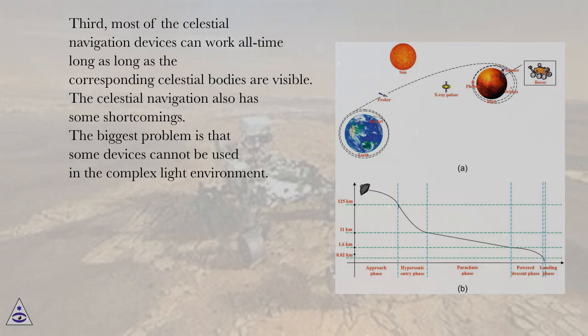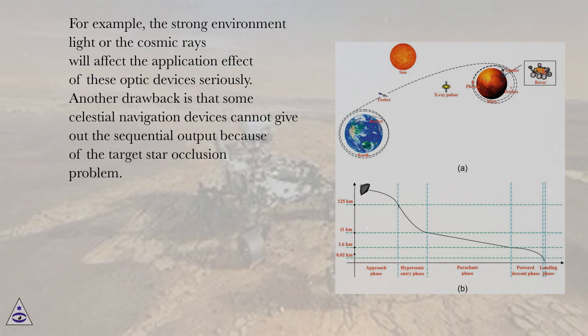The celestial navigation also has some shortcomings. The biggest problem is that some devices cannot be used in the complex light environment. For example, the strong environment light or the cosmic rays will affect the application effect of these optic devices seriously.